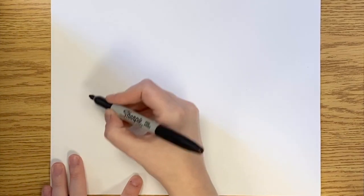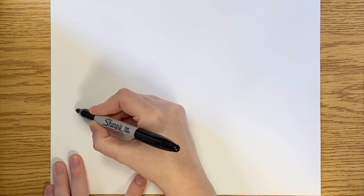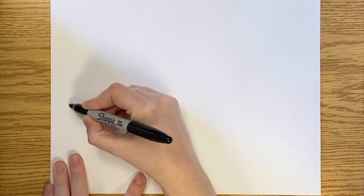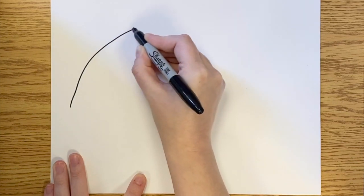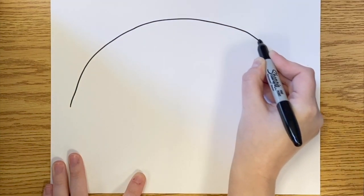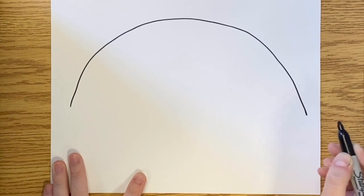To make my eye, I'm starting out by creating a very big curve. It starts about in the middle of the page and it goes up and around all the way to the other side of the page.